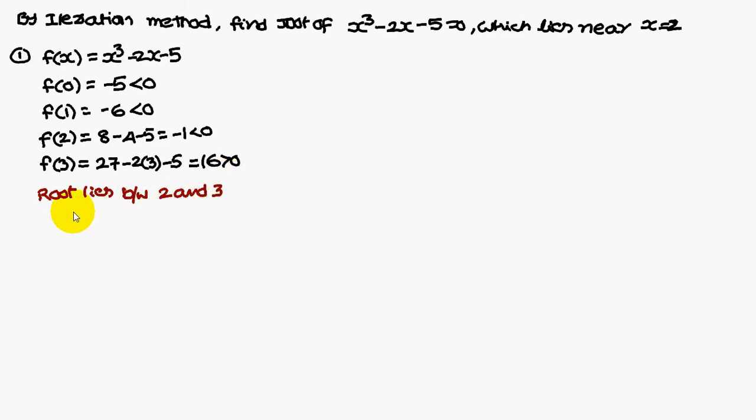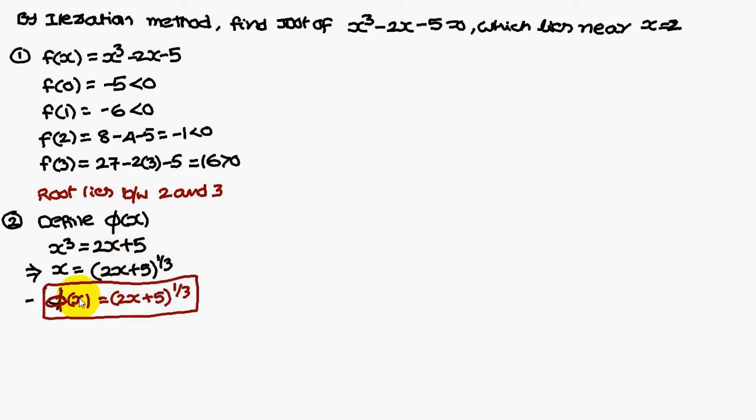Now, we have to define a new function φ(x). x² equals 2x plus 5. From this, you conclude x equals (2x plus 5) to the power 1/3. Therefore, φ(x) equals (2x plus 5) to the power 1/3.